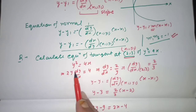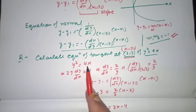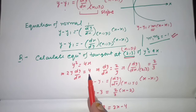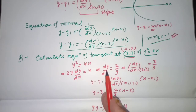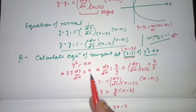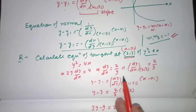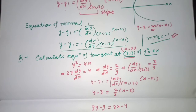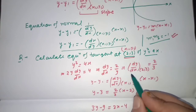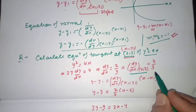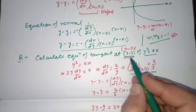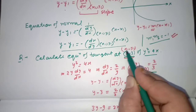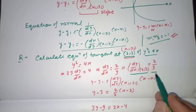Differentiating y² = 4x with respect to x: 2y × (dy/dx) = 4, so dy/dx = 2/y. Now we calculate dy/dx at the given point (2, 3).